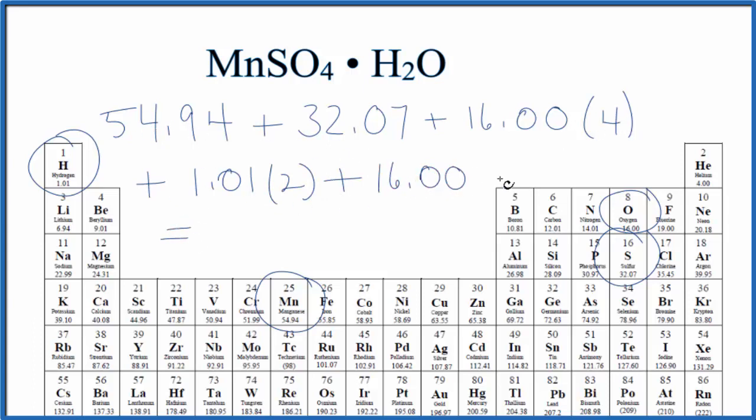We add all this up here, we end up with a molar mass for this MnSO4·H2O, 169.03, and our units are grams per mole.